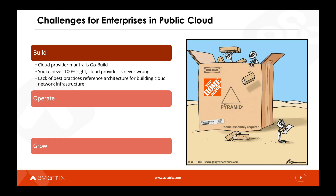CSPs give you the basic constructs — for example, virtual private clouds (VPCs), route tables, subnets, and compute instances — and then you have to figure out how to put them together to house your apps. There's no best-practices reference architecture from a networking perspective. Networking is not the forte of the CSP, and it's not the reason why enterprises move to the public cloud in the first place — it's all about the app. From an operations perspective, CSPs lack a mature toolkit for operating the environment from a networking standpoint.